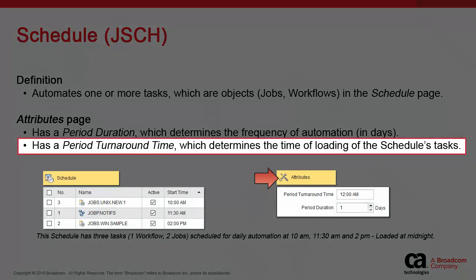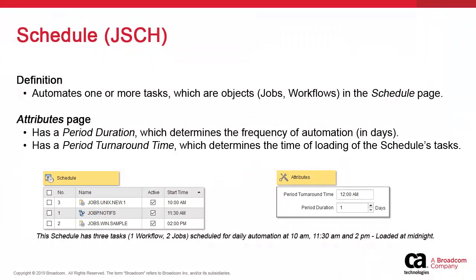The other key property is the period turnaround time. Processes to be automated need to be loaded into the period-based production plan. The turnaround time sets the time at which the previous cycle ends, the new cycle begins, and the schedule's tasks are loaded for execution.